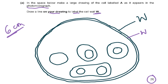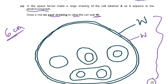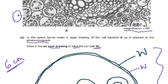Four structures should be shown in the lower half of the cell, with correct position and contents indicated in at least two of them. The label line for W must end on the outer layer or between the two outer layers - if the line goes inside the cell wall, that is wrong. Getting all these elements correct earns five out of five marks.